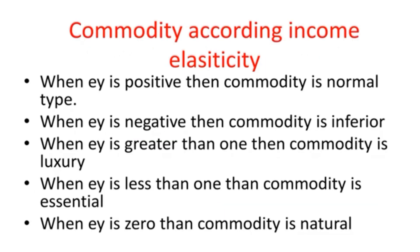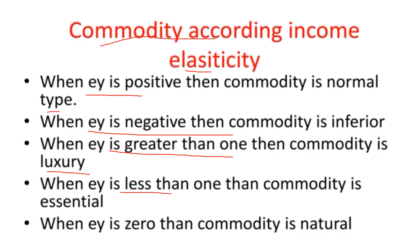Important points to remember for match-the-following questions on commodities according to income elasticity: when income elasticity is positive, the commodity is normal; when negative, it is inferior; when greater than 1, it is luxury; when less than 1, it is essential; and when zero, the commodity is a necessity. Please remember this.